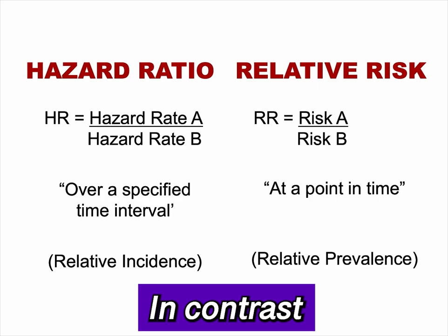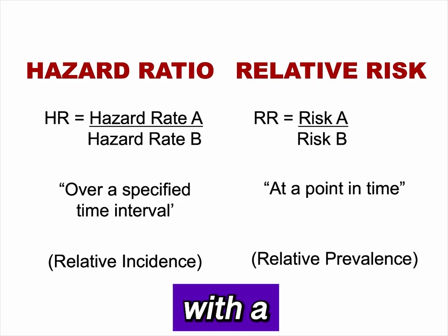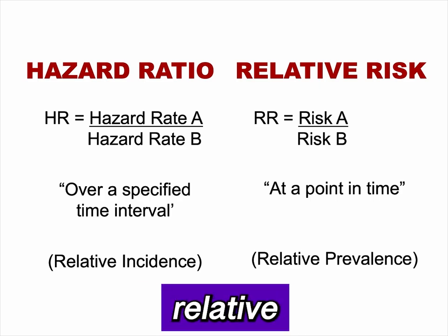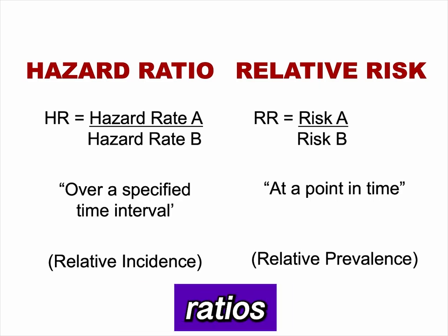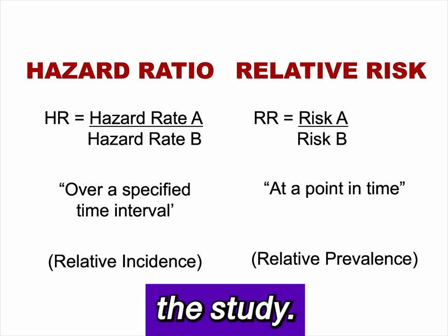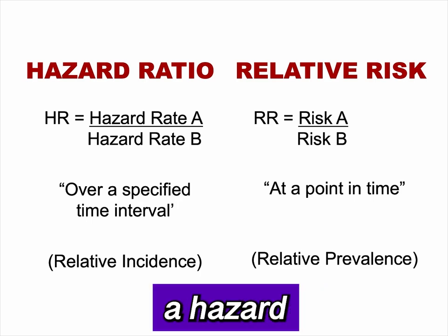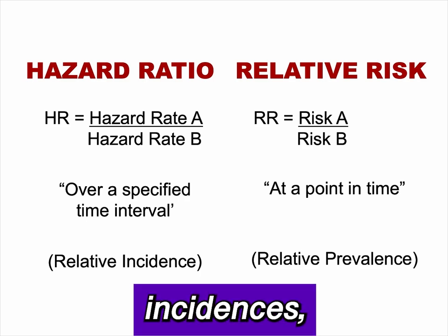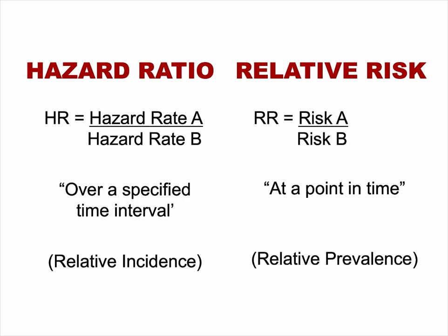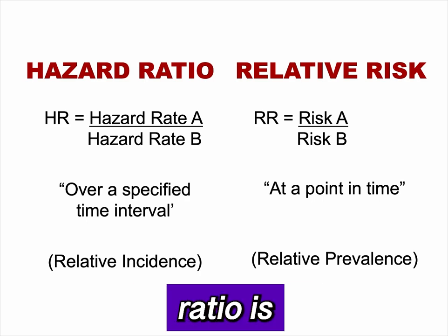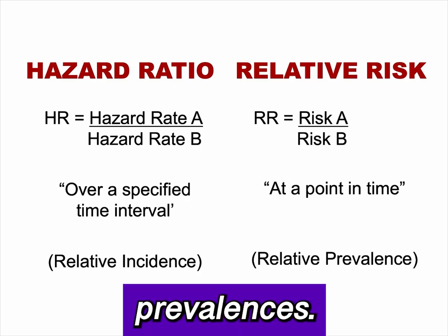In contrast to hazard ratios, which have a specified time interval, relative risk and odds ratios are reported at a point in time — typically the end of the study. One way to distinguish them is that a hazard ratio is a ratio of incidences, while a relative risk or odds ratio is a ratio of prevalences.